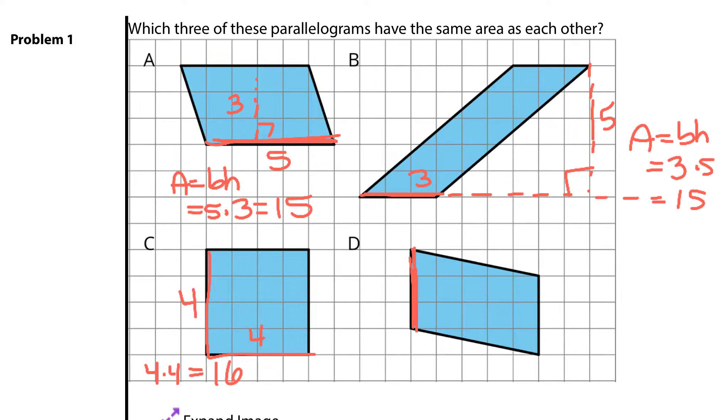Here we have a base of 3. If I come up at the right angle for a height of 5, area will be base times height again, 3 times 5, which is 15. So our solution here, which three of these parallelograms have the same area as each other? A, B, and D.